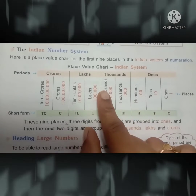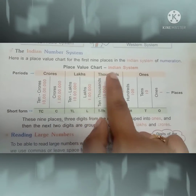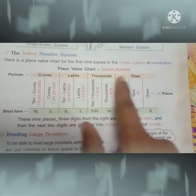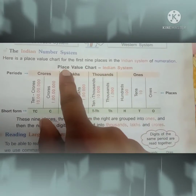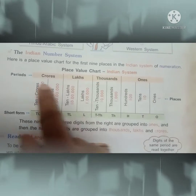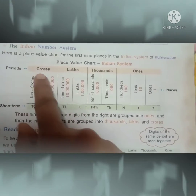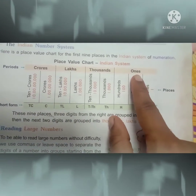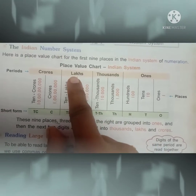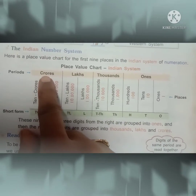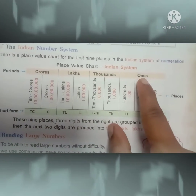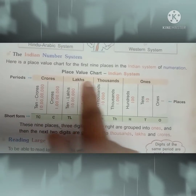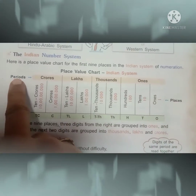Now see here, children — this is the place value chart of the Indian system. Here are the periods. What are they? Ones, thousands, lakhs, crores. These four are the periods.